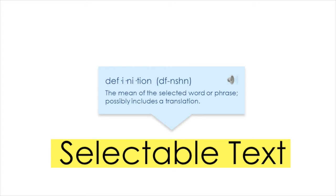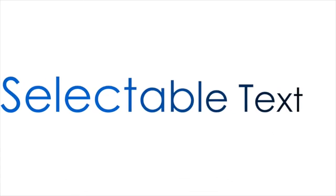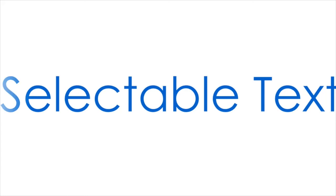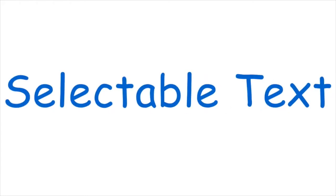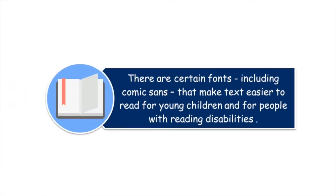Students can also annotate the text, such as highlighting and adding notes. Making text selectable also makes it possible for students to change the size, color, or even font of the text. This is important because certain reading disabilities benefit from very specific software, so enabling them to change the size and font of their text makes it easier for them to read.